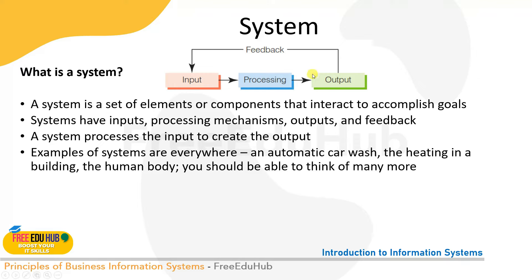After system, we have information. There is a difference between data and information. Information is a collection of facts. Whenever we want detailed information about something, we talk about facts. It can take many forms — text, numbers, images, audio clips, and video clips.